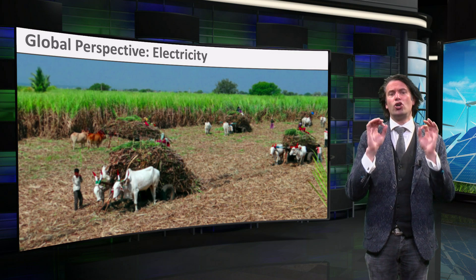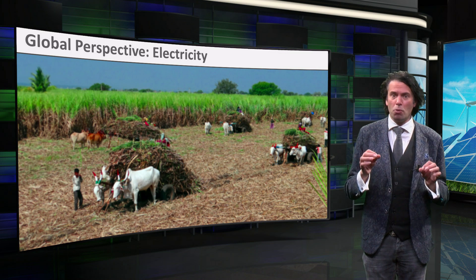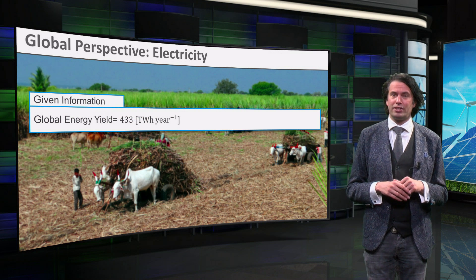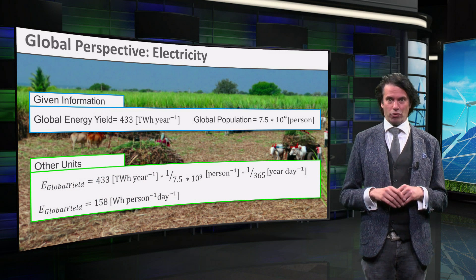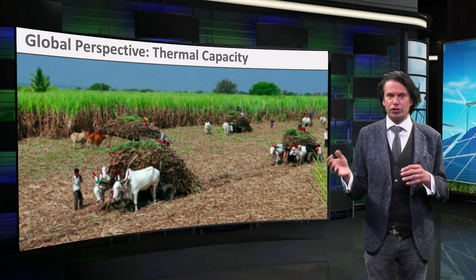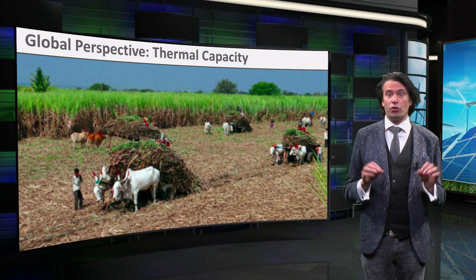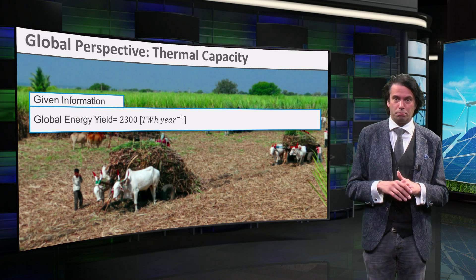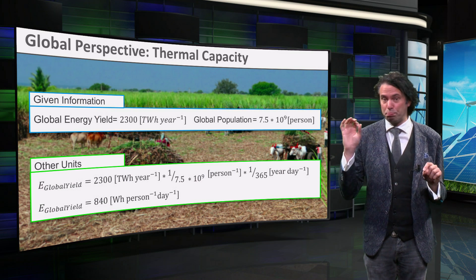Let's consider biomass at a global perspective. If we only look at the installed capacity of biopower for electricity generation, the global capacity is 93 GW, good for 433 TWh per year. Globally, this leads to 158 Wh per person per day. However, the major part of bioenergy is not converted into electricity but is used for heating purposes. The total installed thermal capacity on earth is 305 GW, producing a little more than 2300 TWh per year. This results in 840 Wh per person per day.